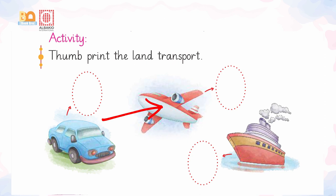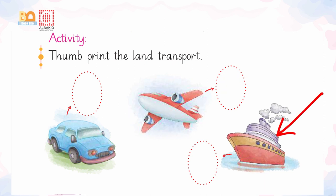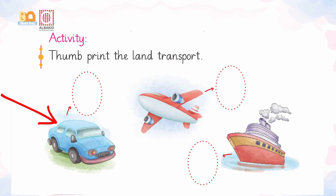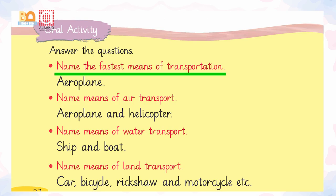Is an aeroplane a land transport? No. What about a ship or boat? No. And what about a car? Yes. Now can you name the fastest means of transportation? Aeroplane.